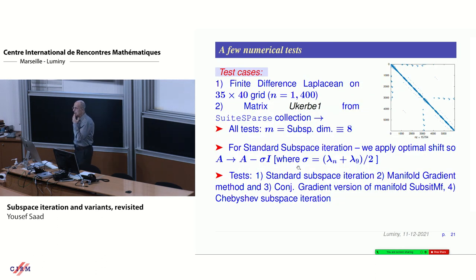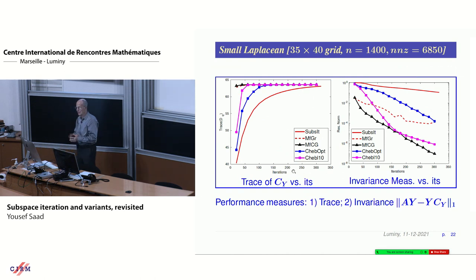Let me give you a couple of numerical tests here. These are two matrices. This is a finite difference matrix of 35 by 40. The other one is a matrix from the PARSEC collection. These are small matrices. I take dimension eight. Subspace iteration down here is with the optimal shift. For Chebyshev, I have two different methods. On the left side, I'm looking at one measure of performance. That is the trace.